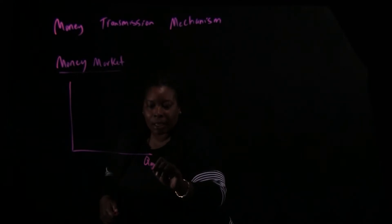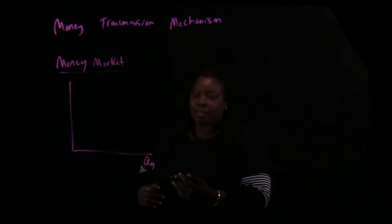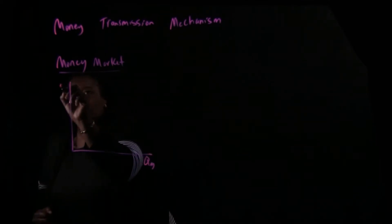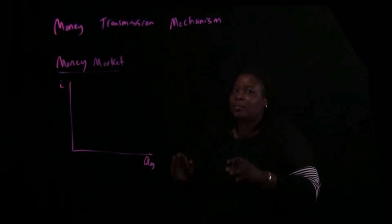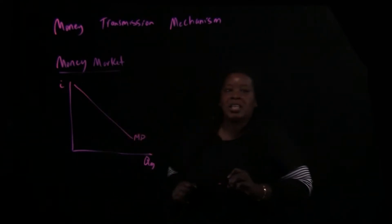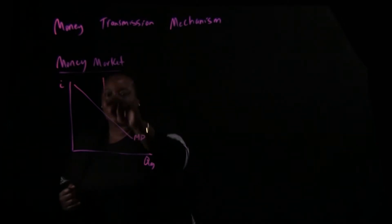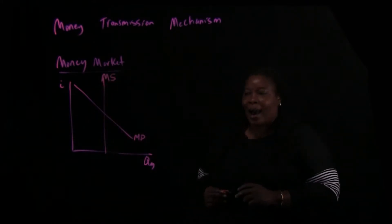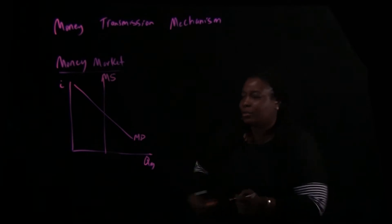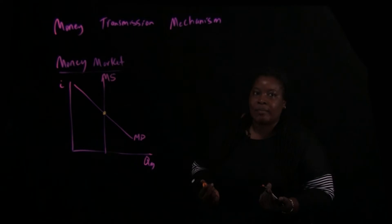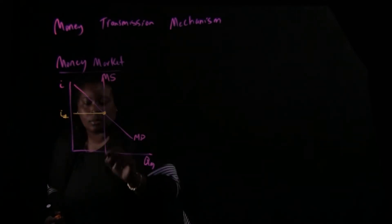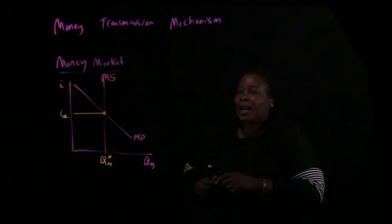Here is the quantity of money — QM — and then we have the price of money, which is the interest rate, little i. You have a demand for money, MD, and a supply of money, MS. Right where demand and supply meet, we have equilibrium, labeled I-star and QM-star.